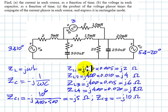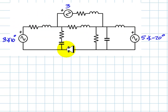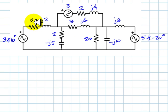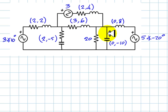Now, let's represent the circuit with the impedances and phasors. First, the voltage phasors for the three sources. Now, the impedances. We're going to write this as (2,2), (2,-5), (3,6), (2,4), 20, (0,-10), and (0,8). For convenience, in rectangular form, the impedance of each one of the branches.